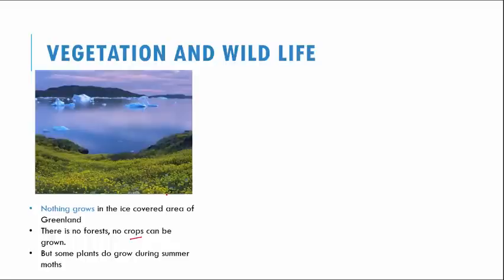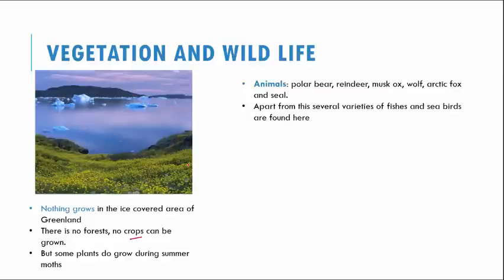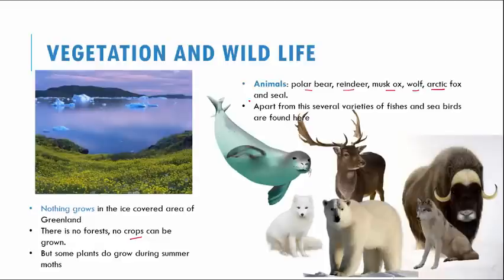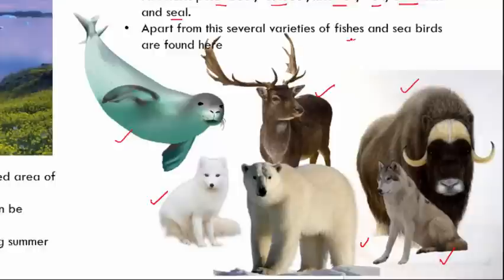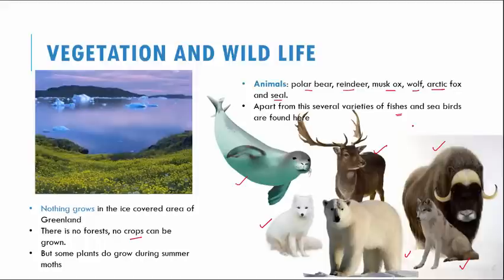When it comes to animals, only those that can withstand extreme cold climatic conditions survive here. Examples include polar bear, reindeer, musk ox, wolf, arctic fox, and seal. Apart from these, there are several varieties of fishes that live in the sea and a few seabirds that occasionally come and go.